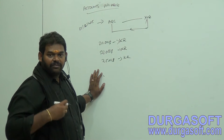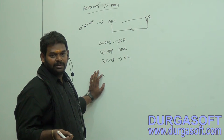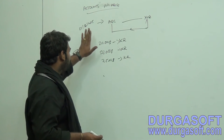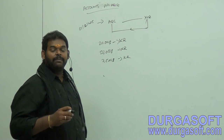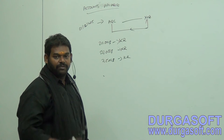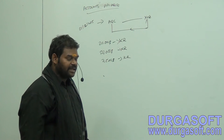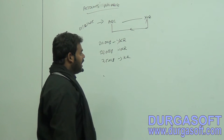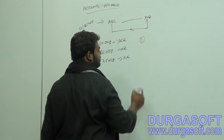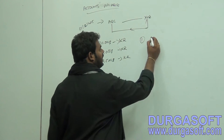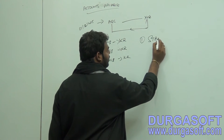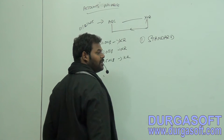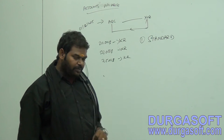I want to make a payment for the vendor. Whenever we need to make a payment, there are three types of payments in SAP. There are three different payment document types. The first one is called Standard. What is the standard payment document?